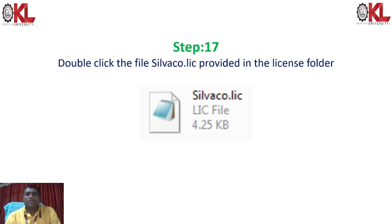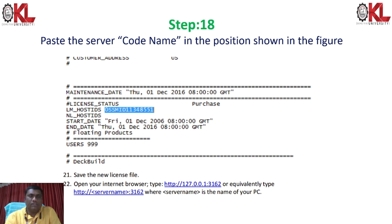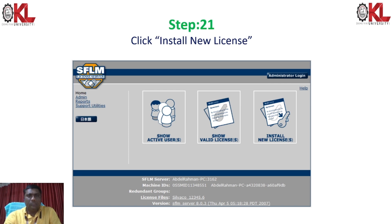Double-click on the file silvaco.lic located in the license folder. Paste the server code name in the position shown in the figure — whatever you copied earlier, paste it here. Click Next and save the new license file. Open your internet browser again using your server name or PC name. The administrator login page for the SFLM license server will open.